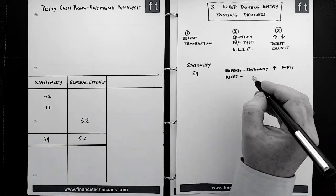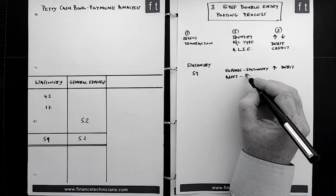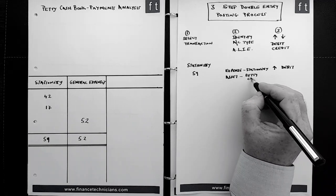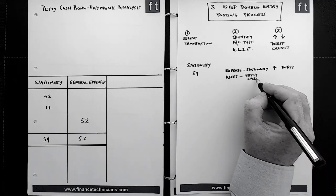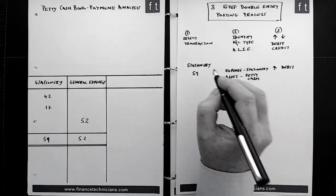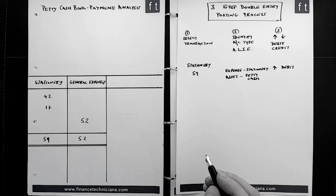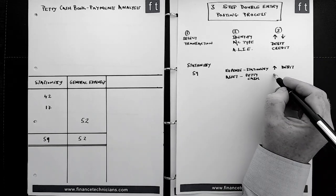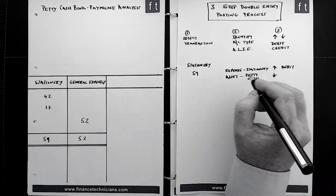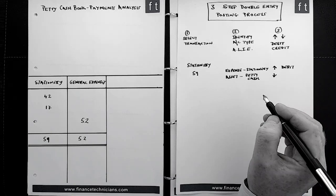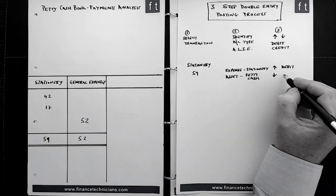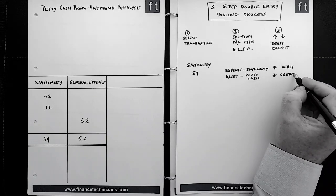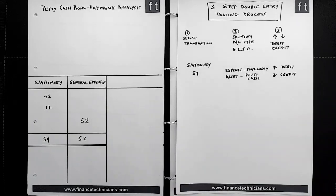The other side of that transaction is going to impact on an asset account — the petty cash account. The petty cash account will be affected in that money is now leaving that asset account, so the value of that asset account is going to go down. To make an asset account go down in value, we need to record that transaction as a credit.